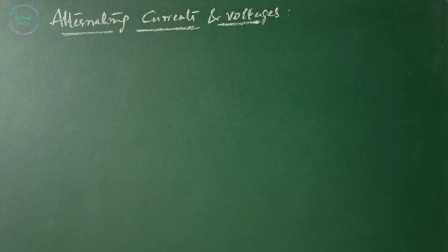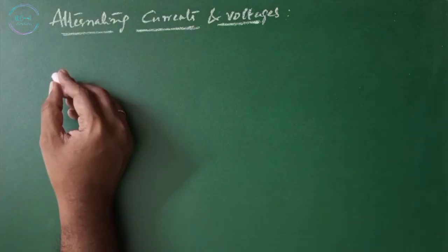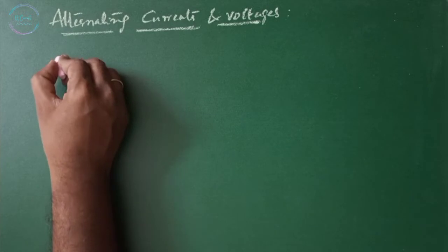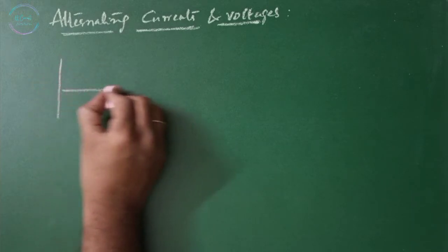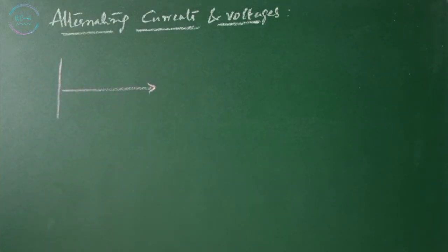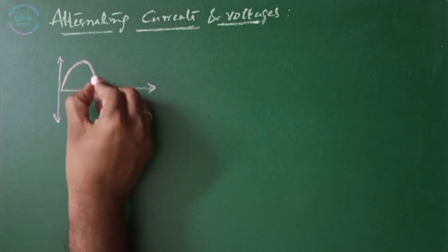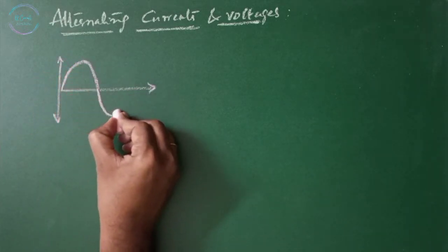Alternating voltages and currents are represented by a sinusoidal wave, generally referred to as a sine wave. An alternating current waveform is defined as the voltage or current that fluctuates with respect to time periodically, with change in polarities and direction. So we represent an alternating wave with a sine wave.